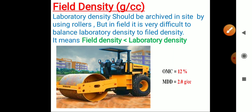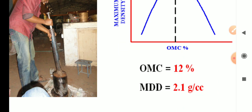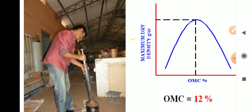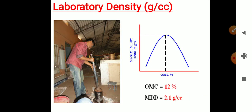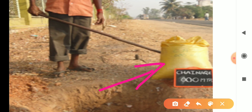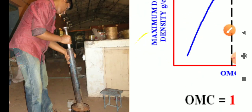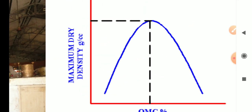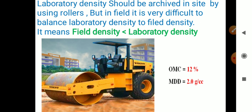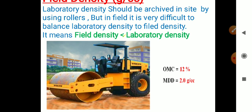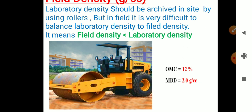For field density, using OMC of 12 percent, we have to achieve MDD in the field. For the same site, we do the compaction test with disturbed soil sample (not undisturbed). After the lab test gives the OMC and MDD curve, in the field we pass rollers and sprinkle water corresponding to the OMC to achieve density.